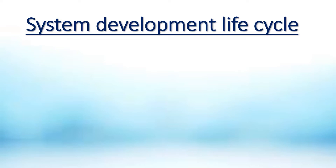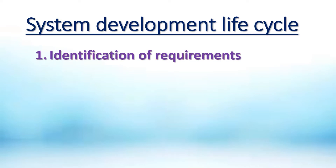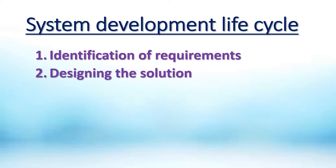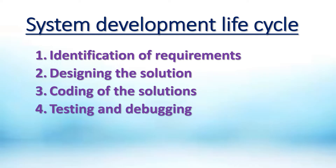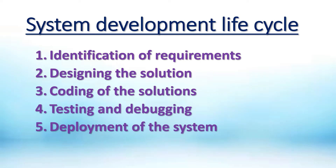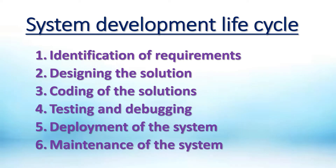The system development life cycle has the following steps: identification of requirements, designing the solution, coding of the solution, testing and debugging, deployment of the system, and maintenance of the system.